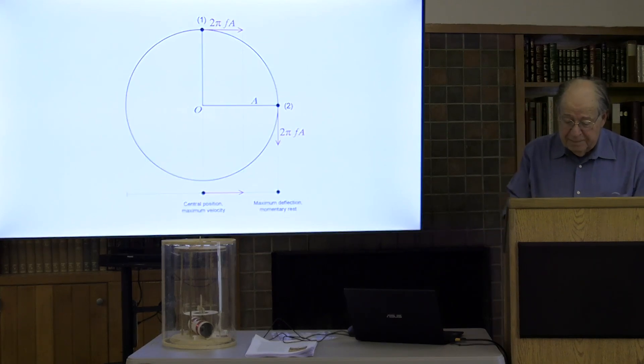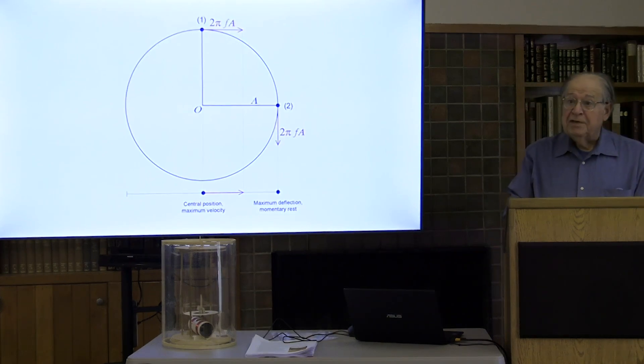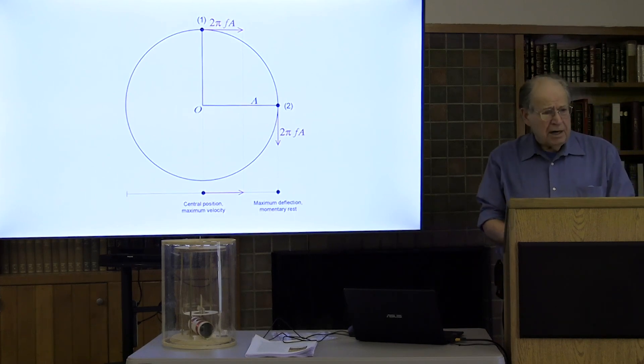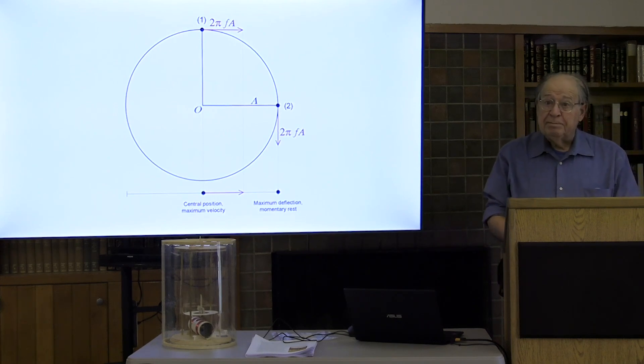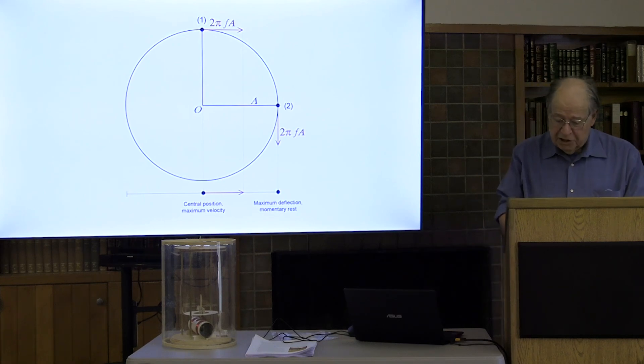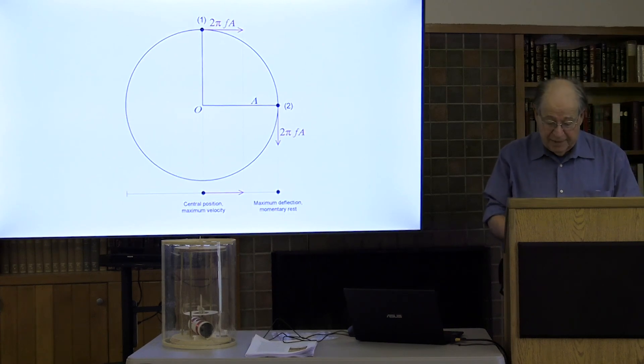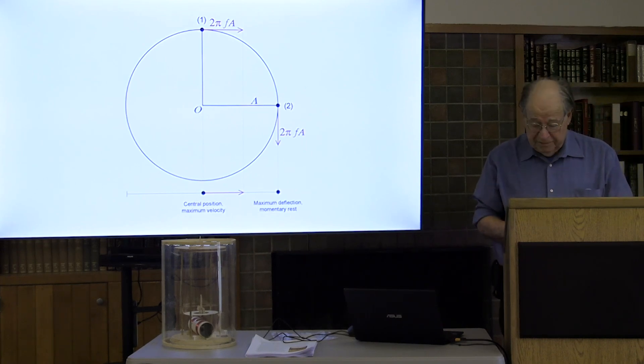Thus, the pendulum's maximum deflection is indeed proportional to its velocity at the central position. And therefore, in our case, if a pendulum resting at its central position is suddenly propelled with some initial velocity, it will swing out to a maximum deflection proportional to that velocity. And therefore, by measuring that maximum, we effectively measure the initial velocity.